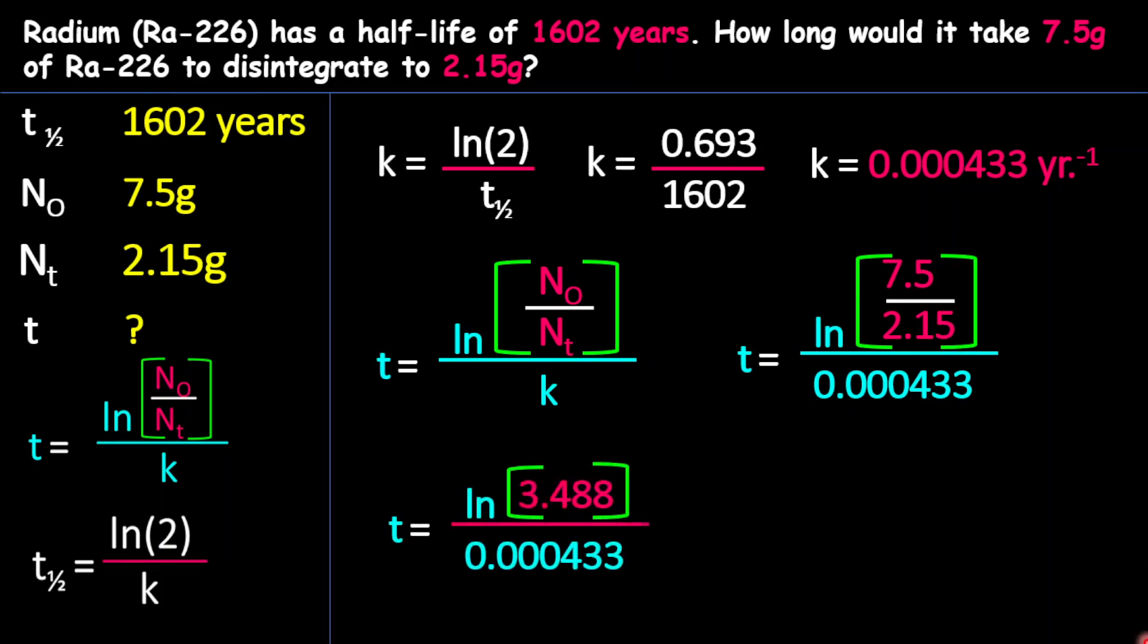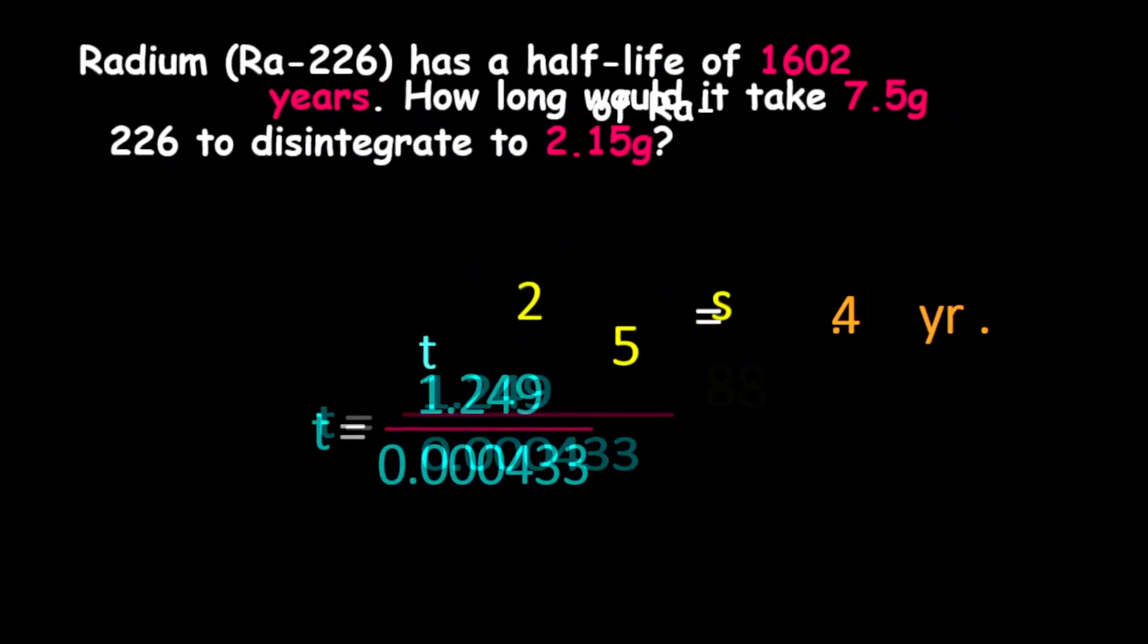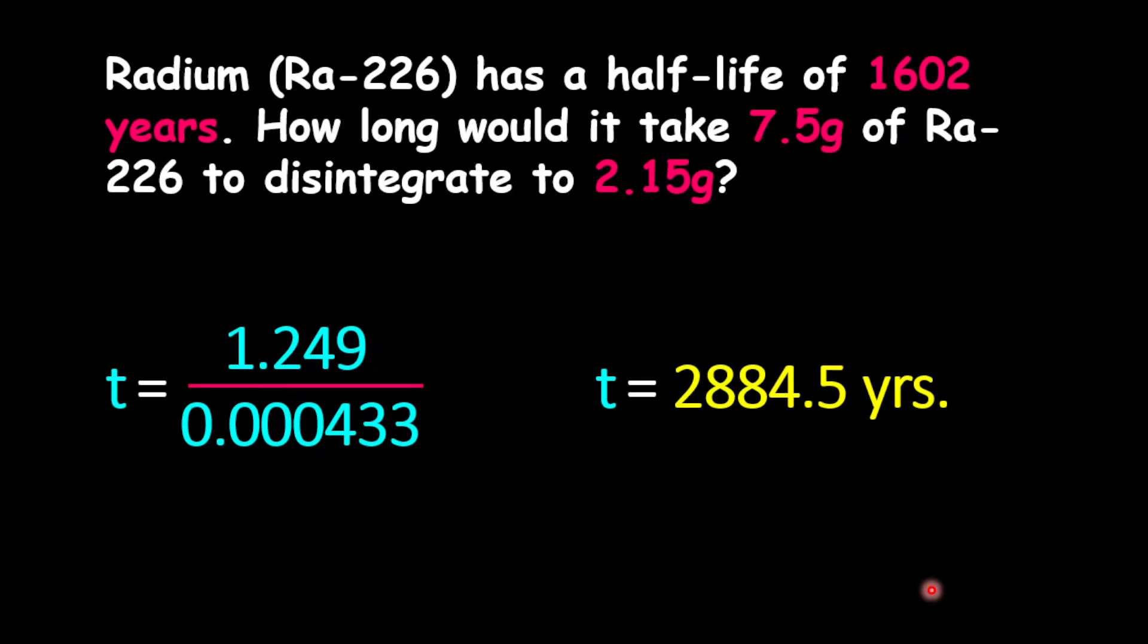Now once you have that, what we can do is find the value of 7.5 divided by 2.15, which gives us 3.488, and therefore natural log of that value divided by the constant rate will give us 1.249 divided by the constant rate. And so therefore, as our final answer, we'll have 2,884.5 years, or 2,884 years and 6 months.